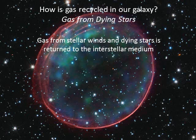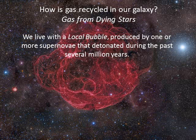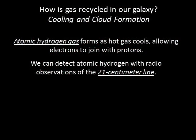Supernovae in particular create bubbles that can have a dramatic effect on the interstellar medium. Fast-moving walls of high-pressure gas called shock fronts sweep up surrounding material and create enormous bubbles of hot gas. Hot bubbles in the distance are easy to spot with X-ray telescopes. However, the nearest bubble is not so obvious because we're living inside of it. X-ray observations show that our local solar neighborhood is surrounded in all directions by hot X-ray-emitting gas. Astronomers conclude that we live within a local bubble in which one or more supernovae must have been detonated during the past several million years. The hot ionized gas in bubbles created by supernovae are dynamic and widespread, but represent a relatively small fraction of the gas in the Milky Way.